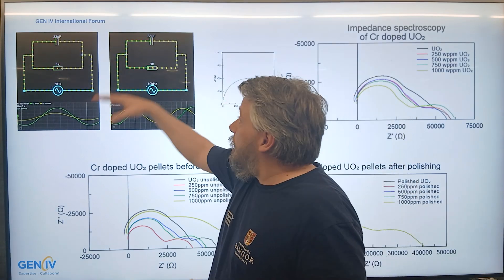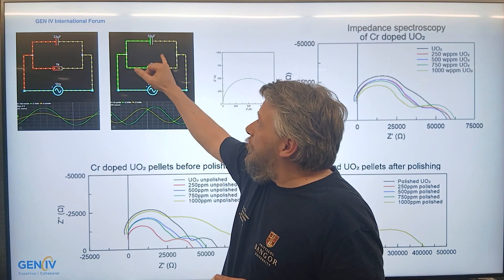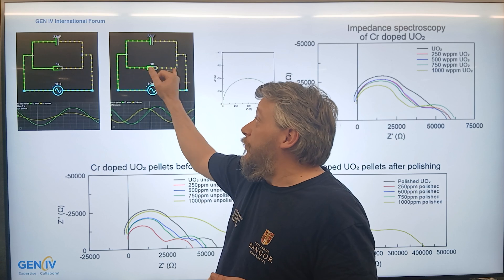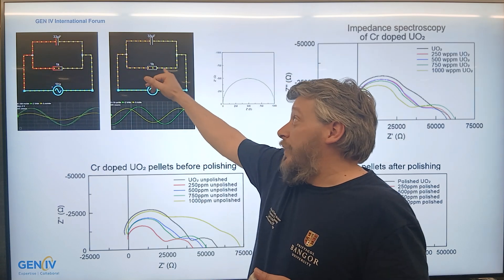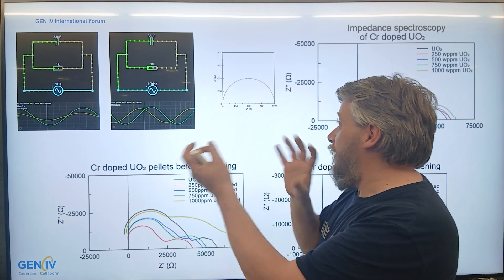Once you start exceeding that, what happens is it starts to behave like a dead short through the capacitive aspect of the material and then starts bypassing the material as a whole through that part. So the 1k, you get no electrons going through there, it's all just going through the charge and discharge of the material.